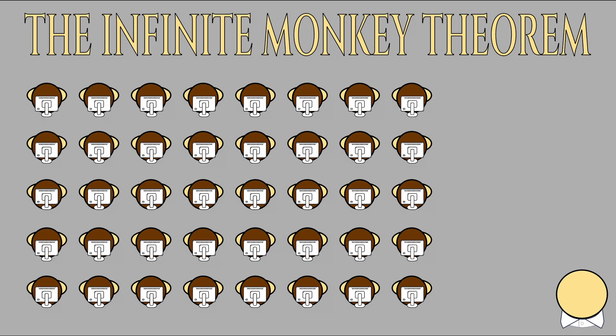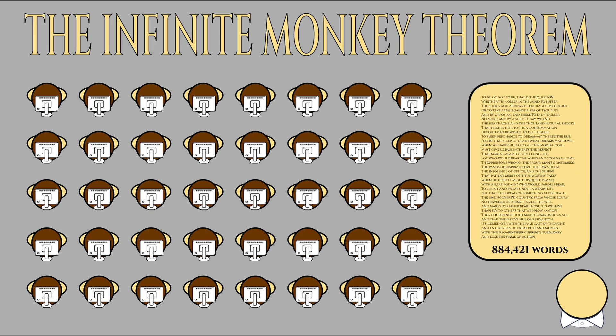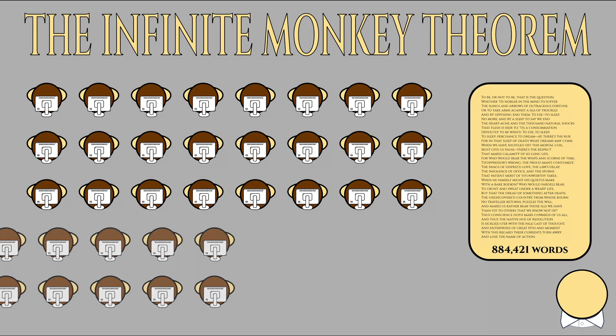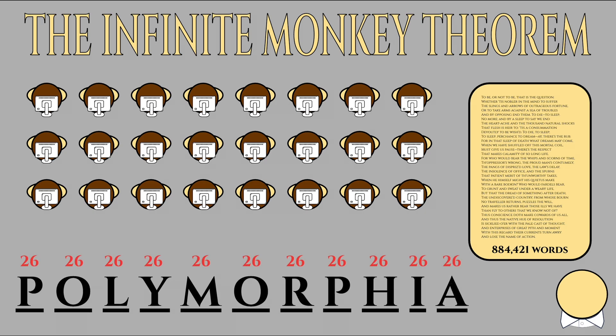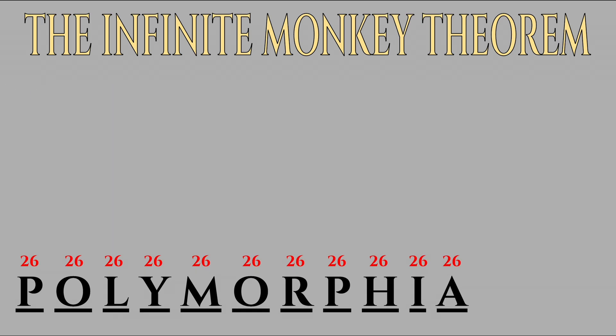Shakespeare's 43 works contain 884,421 words. If each word is around 5 characters long, that's like getting 4 million correct characters in a row. Even if we throw out spacing, capitalization, and punctuation, even typing a word like 'polymorphia' correctly has a probability of 1 over 26 to the power of 11 for any random collection of 11 letters.